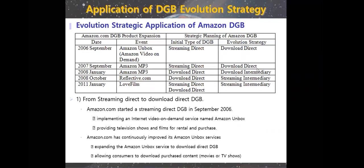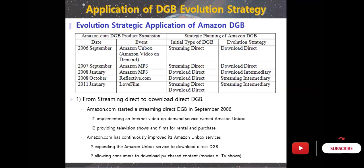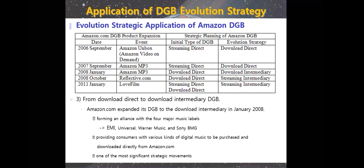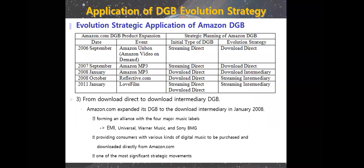This covers the evolution and strategic application of Amazon. As you can see from the table, Amazon expanded from streaming direct to download direct, and then from download direct to the download intermediary model in January 2008.